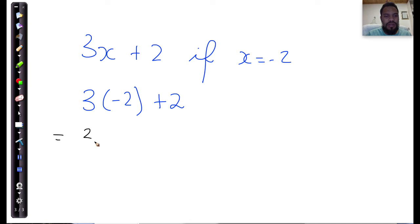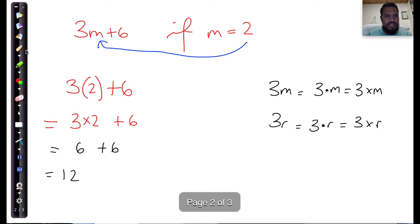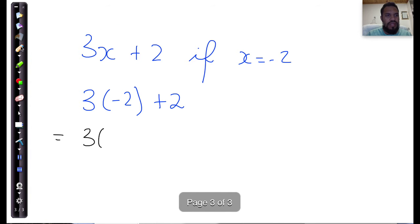And this is quite simple. We have to recap our laws of multiplying and dividing integers. So I'll say that that is equal to 3 multiplied by... 3 multiplied by negative 2 plus 2.